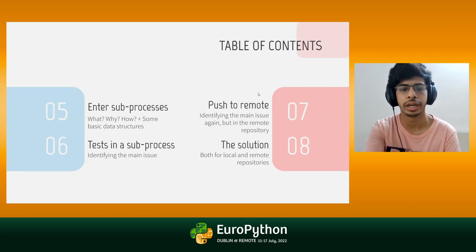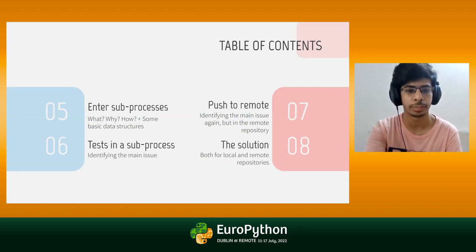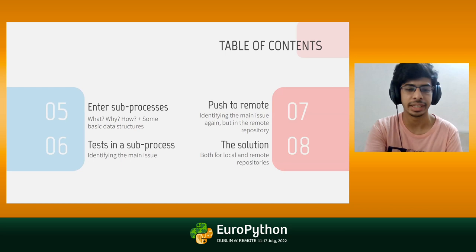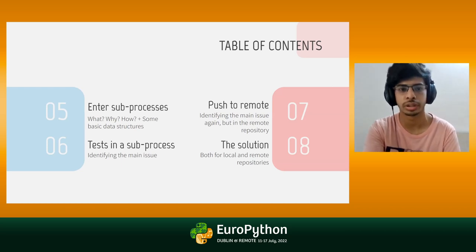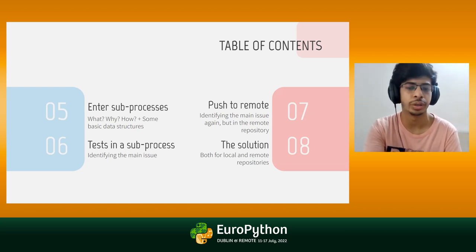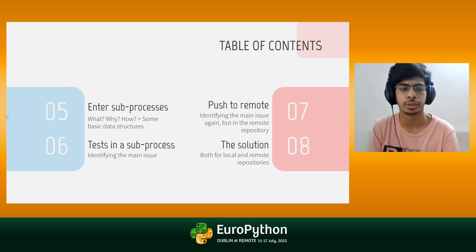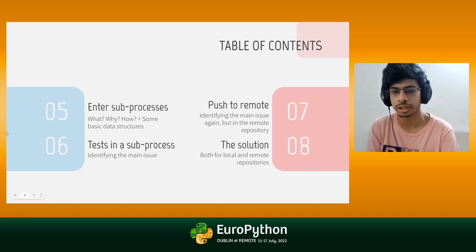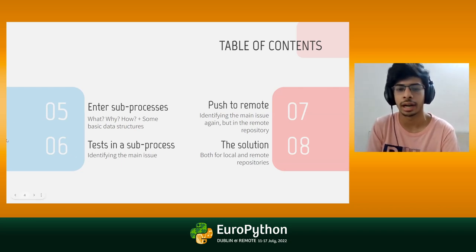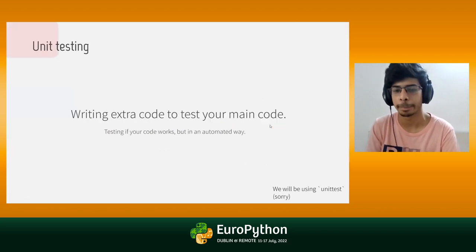Then we'll move ahead to subprocesses: what they are, why and how, and some basic data structures you should be concerned with when using subprocesses while unit testing. Then running tests in a subprocess — this would be the part where we identify our main issue. And then we'll push everything to remote, see how the issue is still persistent, and work on a solution.